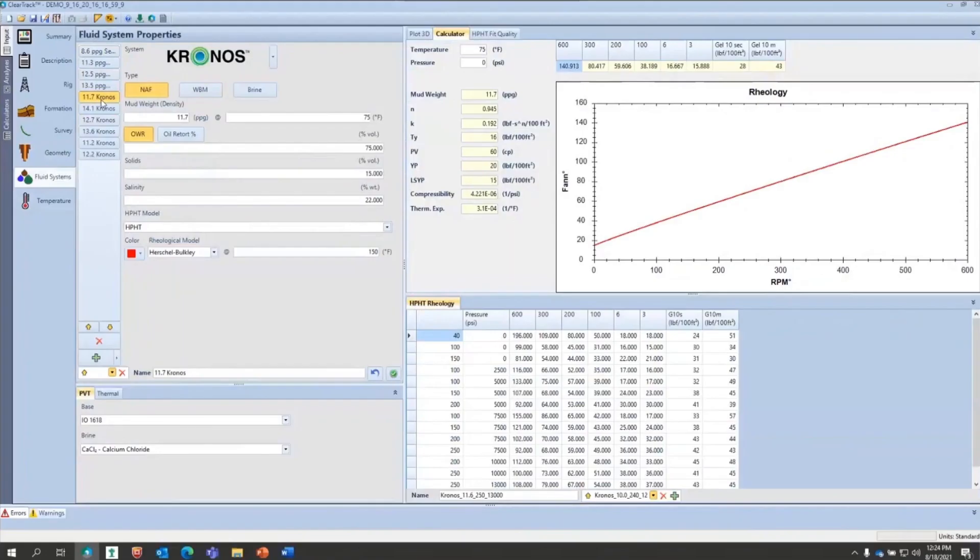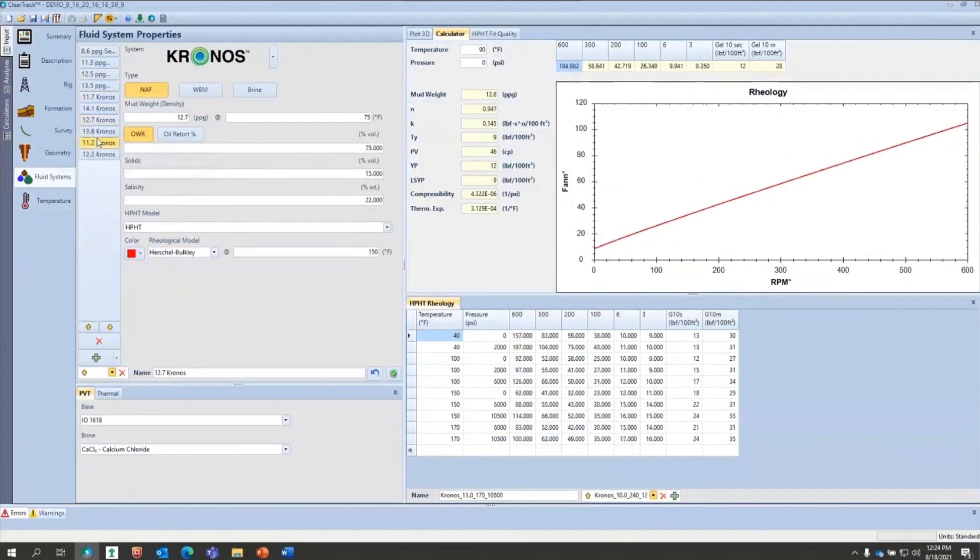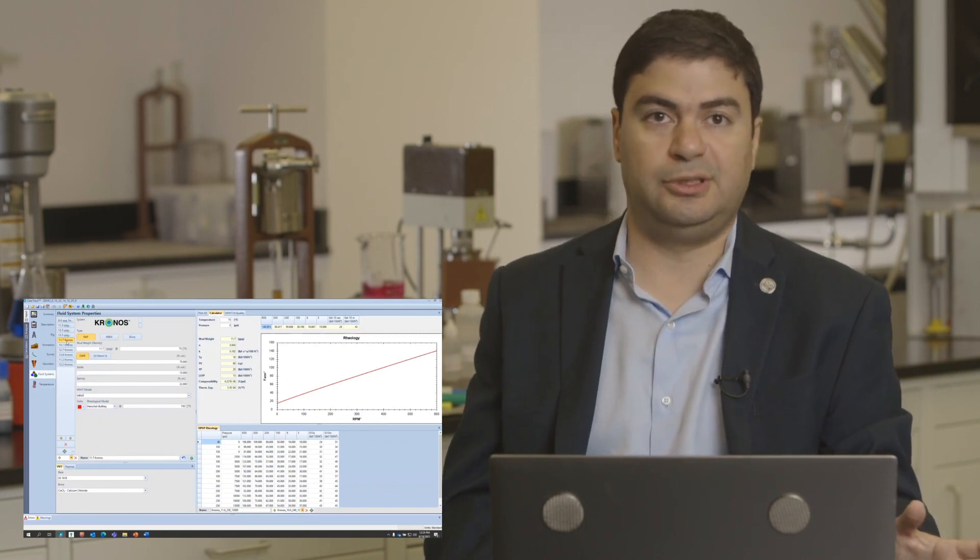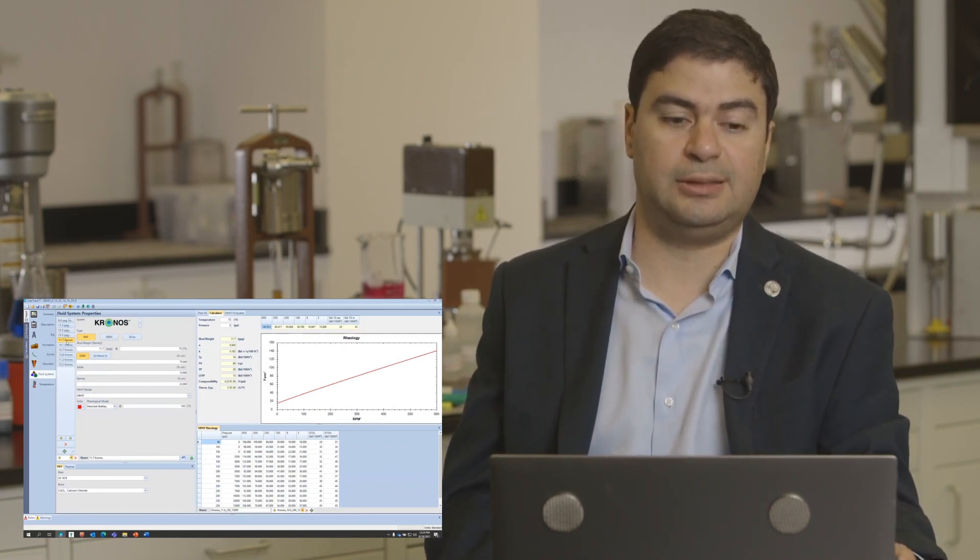Being a fluids company, ClearTrack has the largest data set on a database of different base fluids, different brines, all the properties around the brines and the base fluids. Things like PVT data, which is how the volume of the fluid changes based on pressure and temperature, which of course affects density.